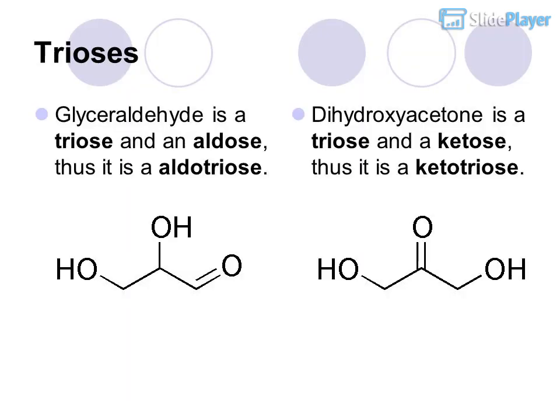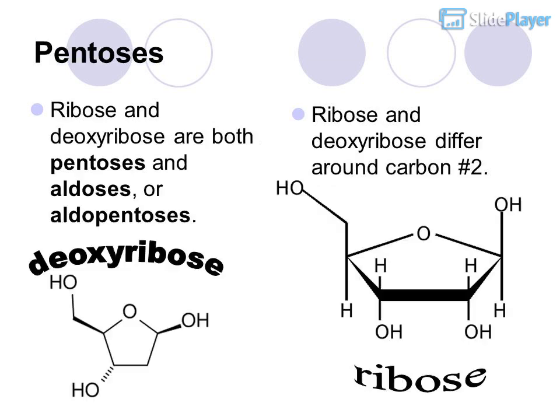Trioses: Glyceraldehyde is a triose and an aldose, thus it is an aldotriose. Dihydroxyacetone is a triose and a ketose, thus it is a ketotriose. Pentoses include deoxyribose and ribose. Ribose and deoxyribose are both pentoses and aldoses — aldopentoses. They differ around carbon number 2.